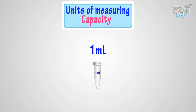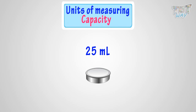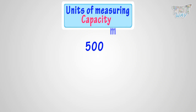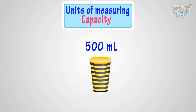Now, let's learn how much quantity is 500 milliliters. Here, we have a container that can hold at most 500 milliliters of water. So, its capacity is 500 milliliters.